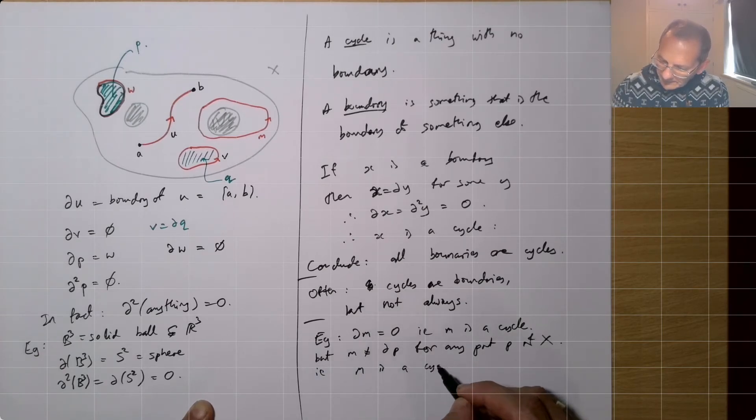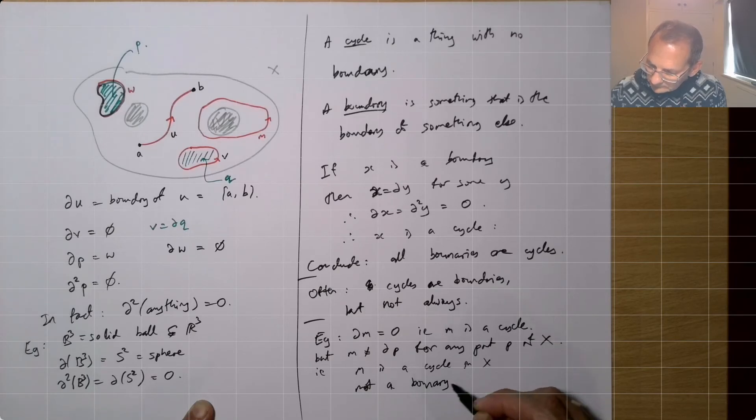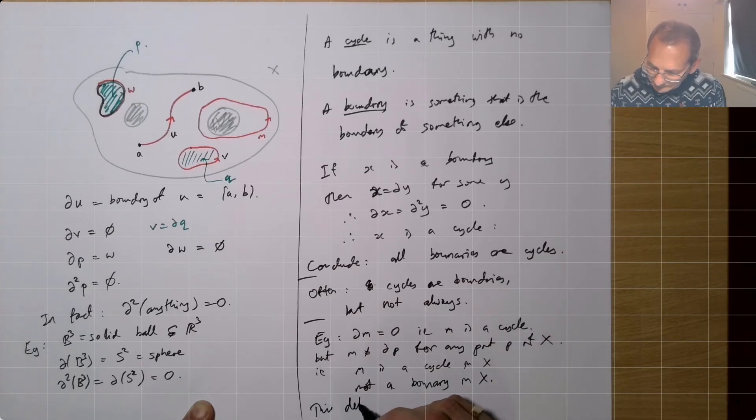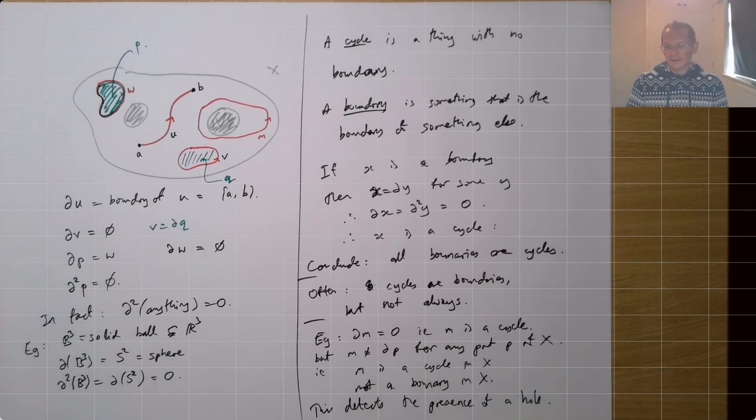M is a cycle in X, not a boundary in X. And so this detects the presence of a hole. So there's the basic, there's your basic principle. If you want to see if there's any holes in a space, you need to look for cycles that are not boundaries. And whenever you have a cycle that's not a boundary, that's indicating that there's a hole.